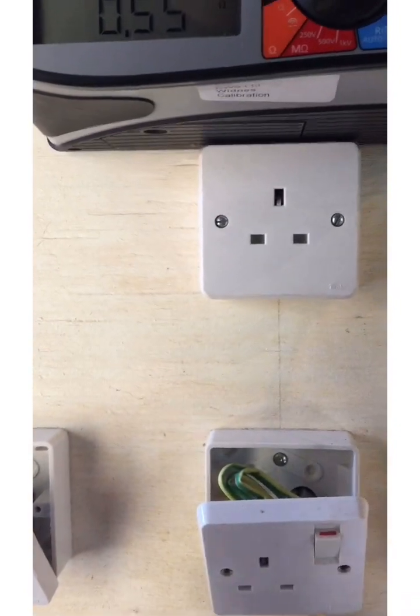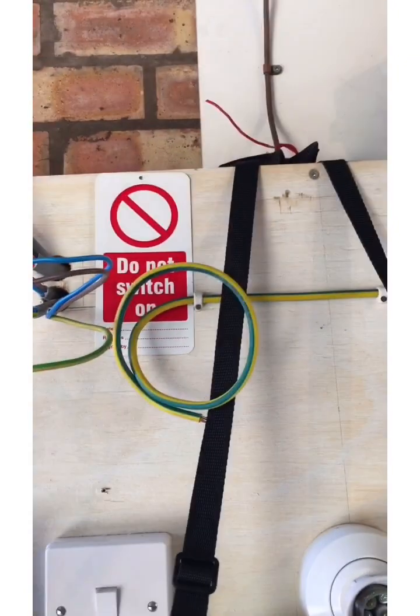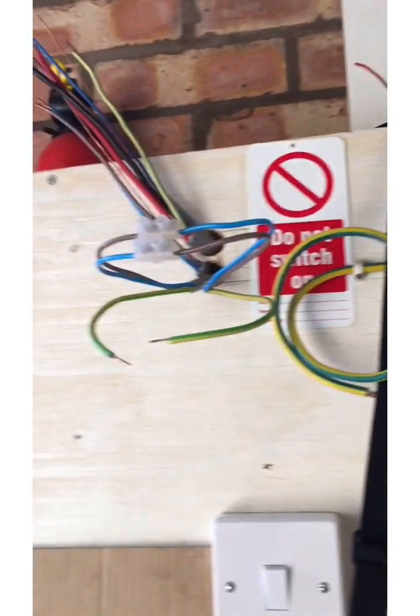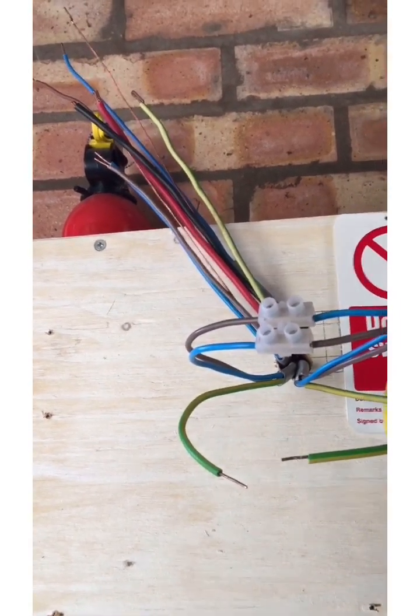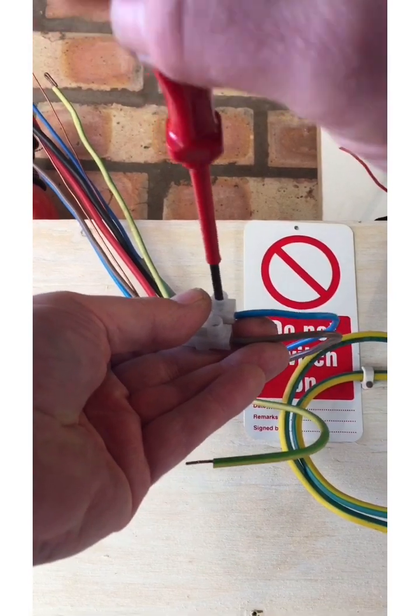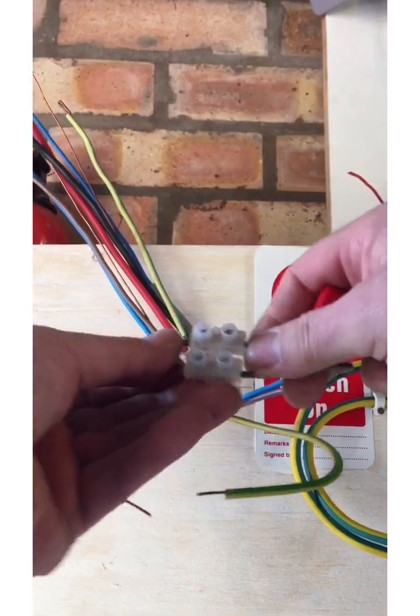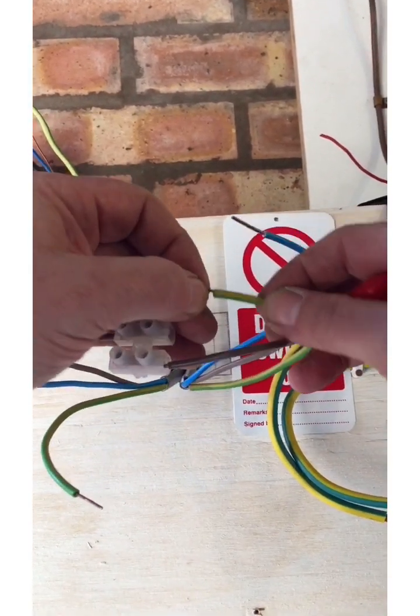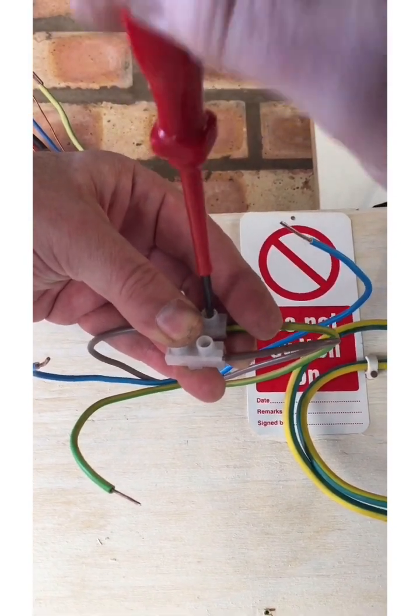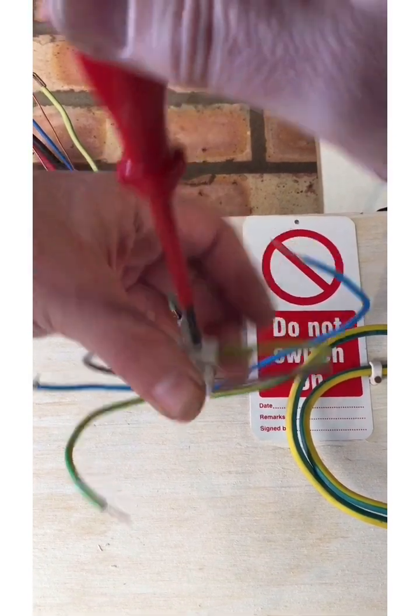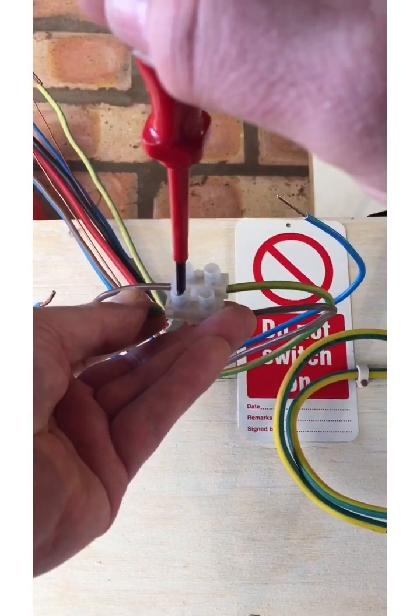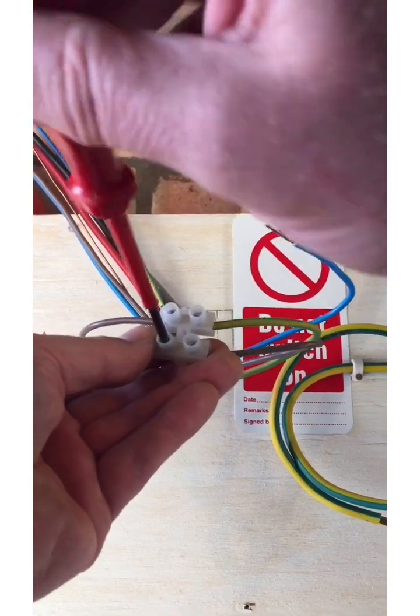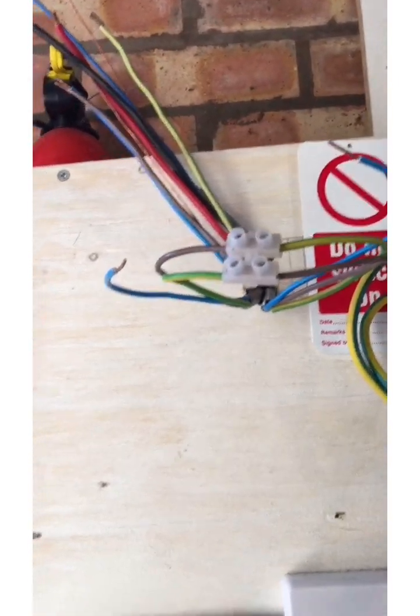So step three. Now step three is going to give us an R1 plus R2 value and it's also going to confirm polarity. And that's also going to be the final confirmation that the sockets are connected correctly. So if I take out the neutral and if I put the again outgoing line conductor incoming CPC and vice versa, and that's our figure of eight connection. There we go.